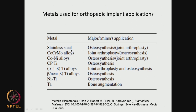Stainless steel is used in osteosynthesis and joint-related applications. Cobalt-chromium-molybdenum alloys — again joint arthroplasty, osteosynthesis. Cobalt-nickel alloys — osteosynthesis and joints. Commercially pure titanium — osteosynthesis. Different types of titanium alloys — joint arthroplasty and osteosynthesis. Beta and near-beta titanium alloys — osteosynthesis. Nickel-titanium — osteosynthesis. Tantalum — bone augmentation. So stainless steel and several alloys including nickel are all used quite a lot in the orthopedic area. This table is adapted from a particular reference.